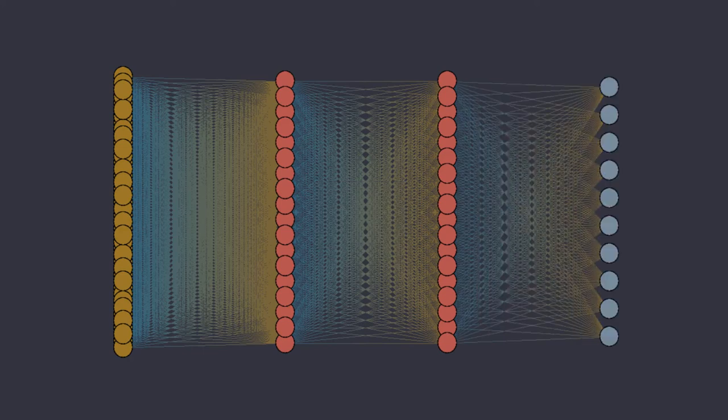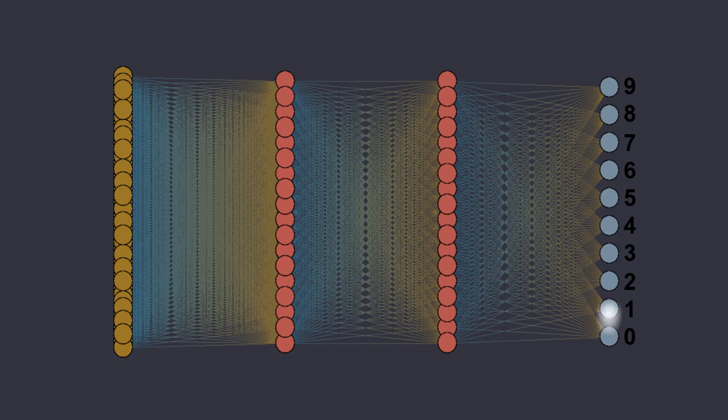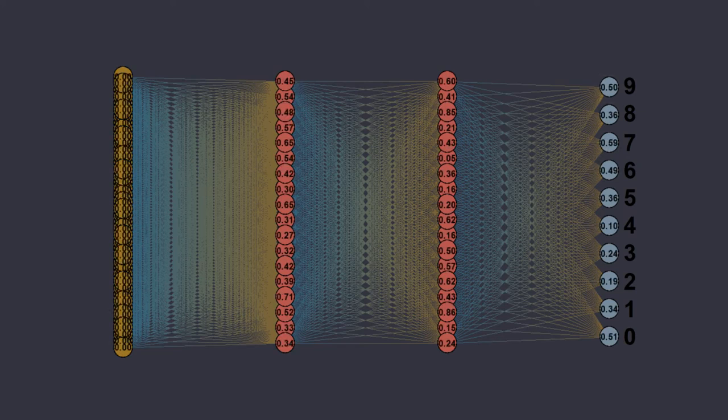The network ends up with the output layer, formed by 10 nodes, each one associated with a figure. So the first node down here is associated with a zero, then there is a one, and then all the other digits, till the nine. Each value tells us how much the network is confident in its evaluation.